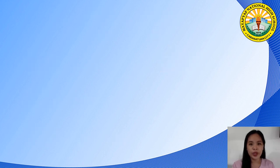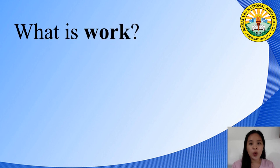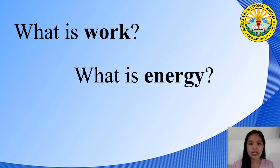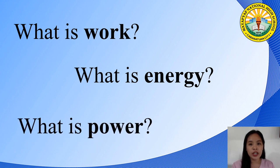Now let's have a recap. Work is the product of force and displacement. For work to be done, the displacement of the object and the force applied on it must be in the same direction. Energy is the capacity to do work — it can be kinetic energy, which is the energy of motion, or potential energy, which is the energy at a certain height or stored energy. Power is the rate of doing work or rate of using energy.